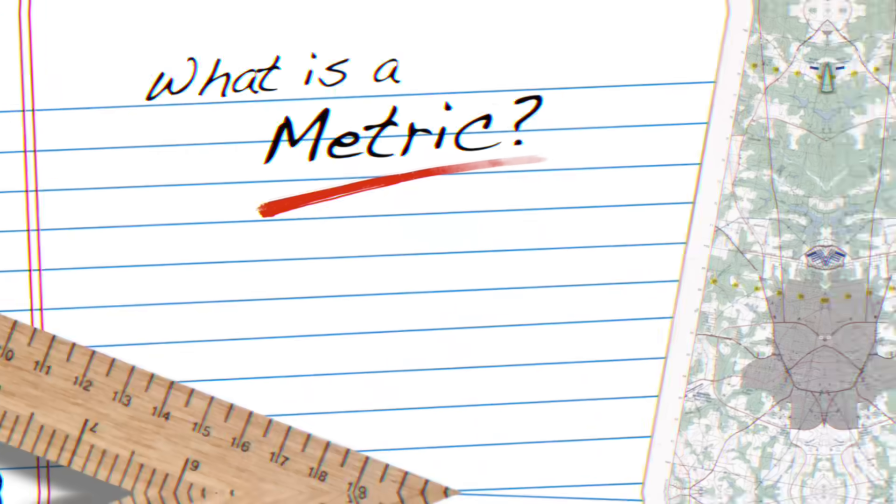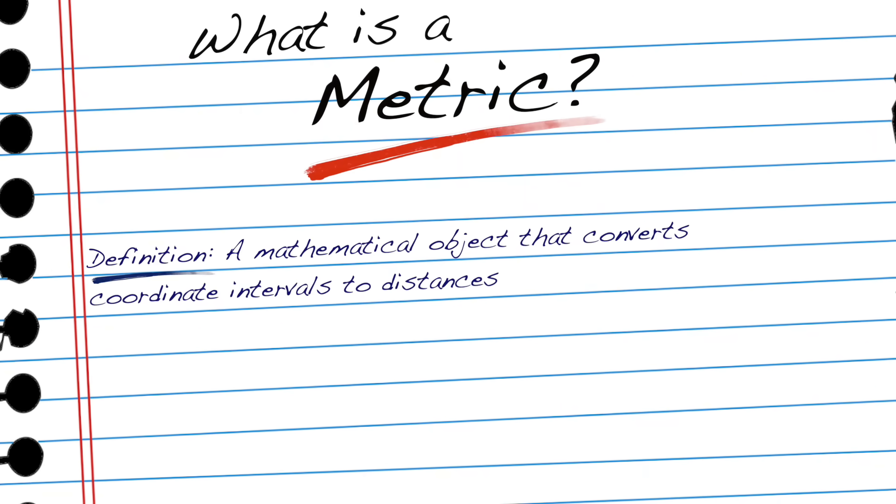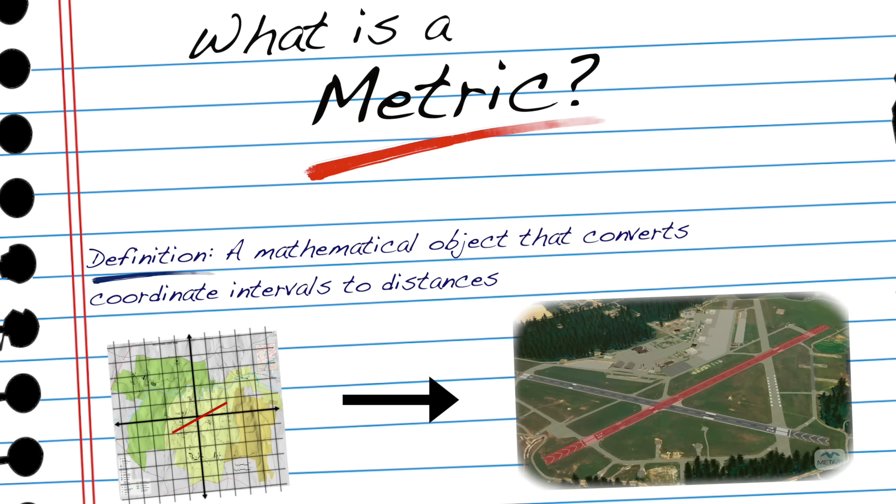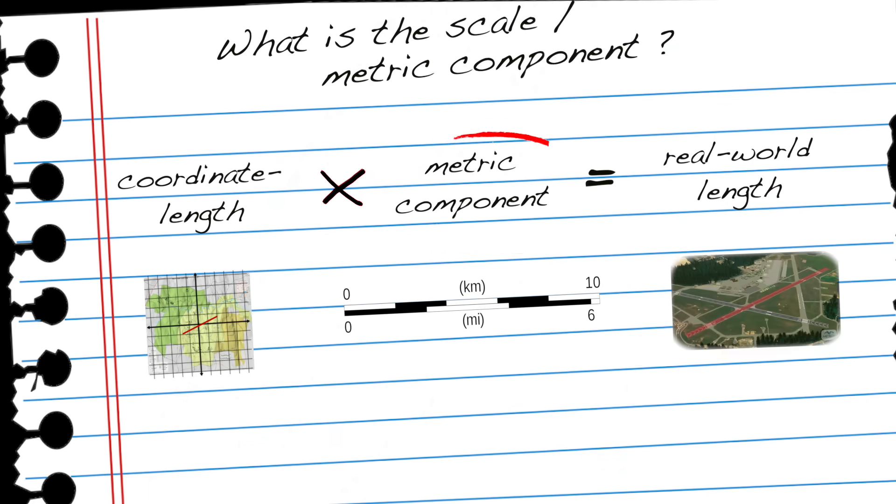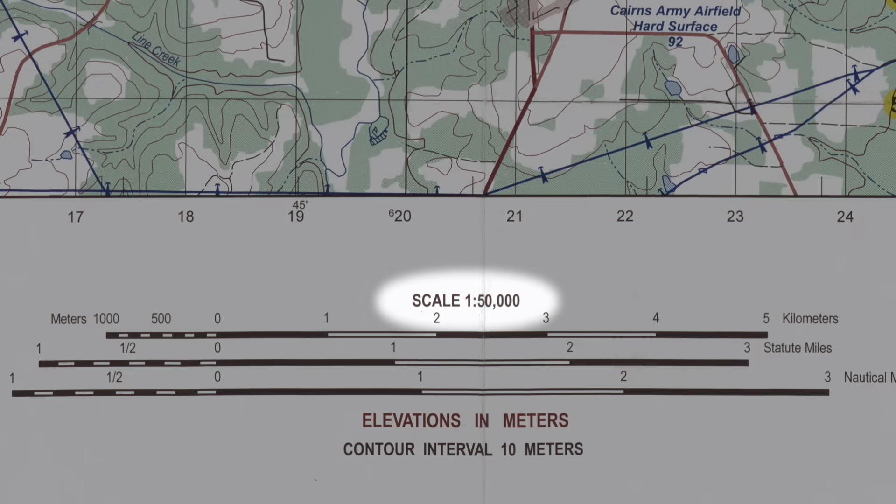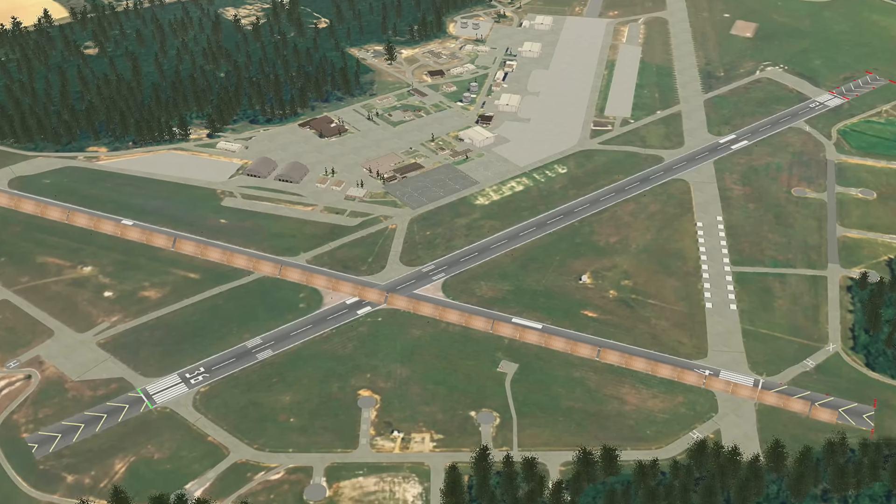The bar scale is thus the map's metric, or the mathematical object which functions to convert the map's coordinate intervals to real distances on the ground. The value or component of this metric is simply the ratio given by the bar scale. In this case, that ratio is 1 to 50,000, since one centimeter on the map corresponds to 50,000 actual centimeters.